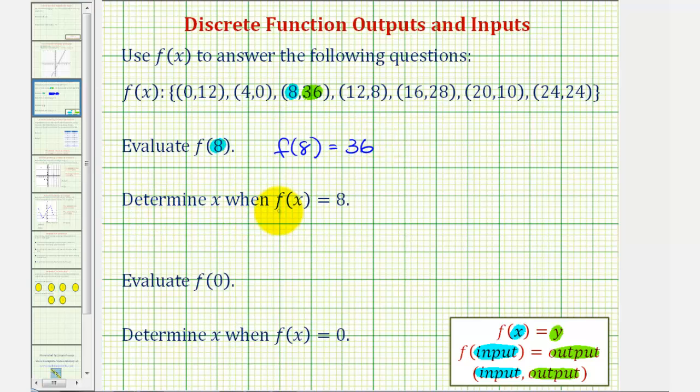Next, we're asked to determine x when f of x equals 8. Well, because we're given the function value, 8 is the y value, so now we're looking for an ordered pair in f where the y coordinate is 8. Notice here it is, so when the function value or y value is 8, notice how the x value or input must be 12. So here, x equals 12 when f of x equals 8.